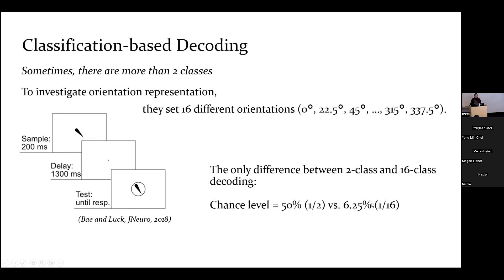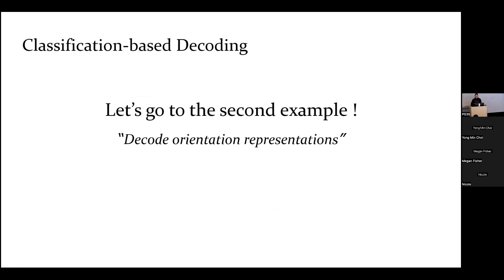A question: does the classification have to be discrete? Can the model give a continuous prediction? That would be a regression model, not a classification-based decoding model — yes, you can do a regression model to answer that. So let's go to the second example, where we gather results to see the dynamics of orientation representation. Subjects see a stimulus with a specific orientation, and after a delay they respond. The experiment uses 16 different orientations, so we do 16-class classification based on EEG data.